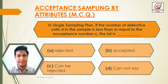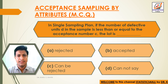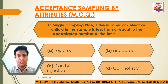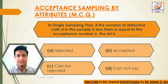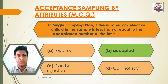Question 14: In a single sampling plan, if the number of defective units D in the sample is less than or equal to the acceptance number C, the lot is — Option A: Rejected. Option B: Accepted. Option C: Can be rejected. Option D: Cannot say. The answer is Option B — Accepted.